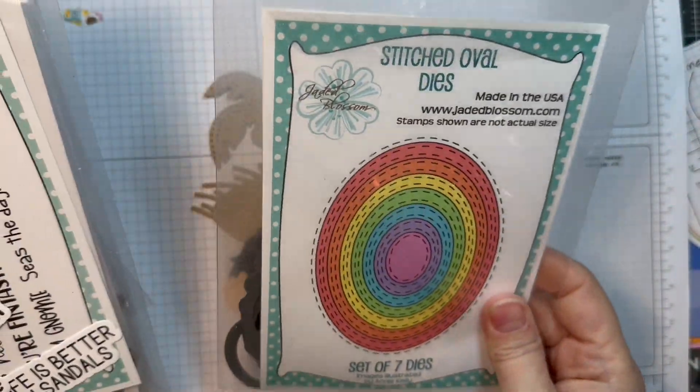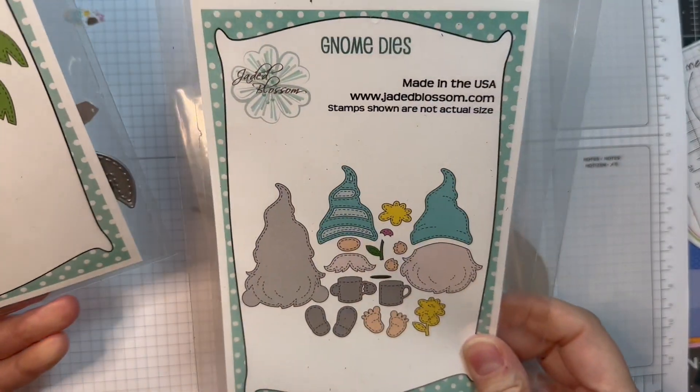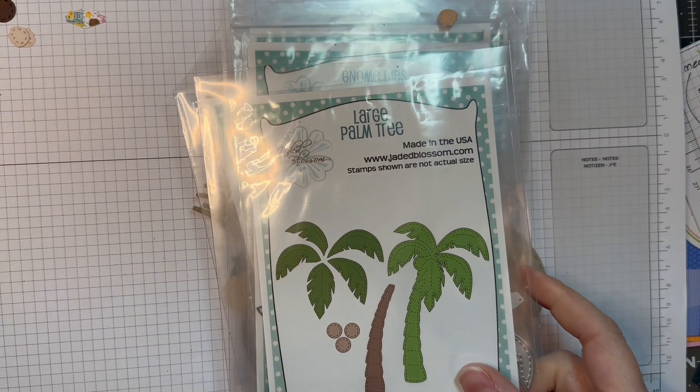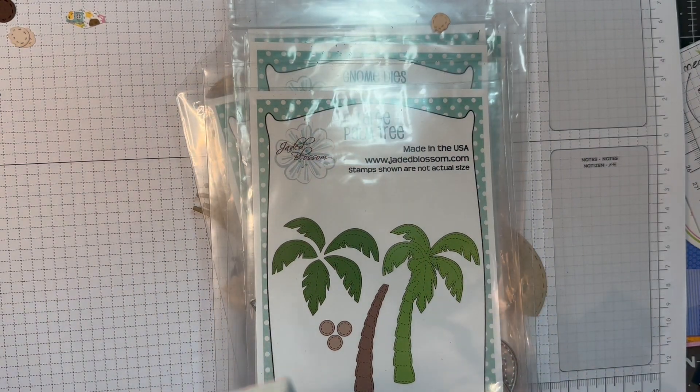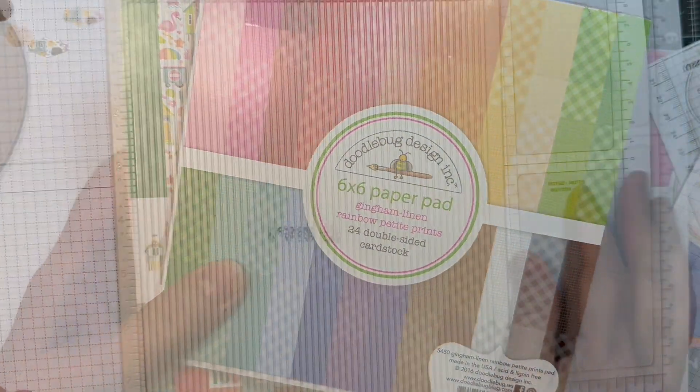I'm using Jada Blossom's Stitched Oval Dies, their Ahoy Gnomey Stamp Set and Outline Dies, the Gnome Dies Tiki Add-ons, the Gnome Dies and the Large Palm Tree Die. I'll be using Doodlebug's Seaside Summer 6-inch Pad along with their Gingham Linen.